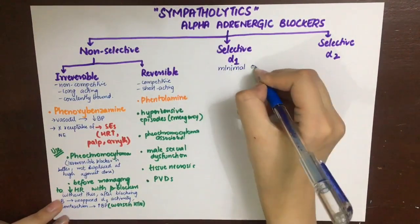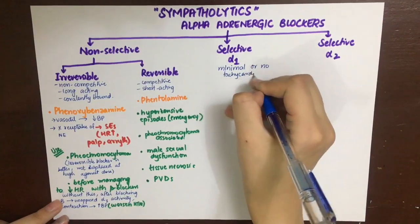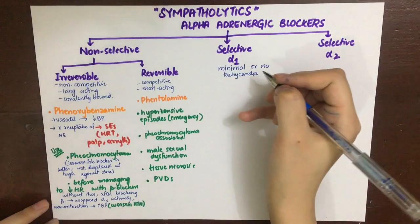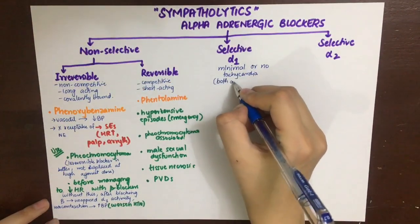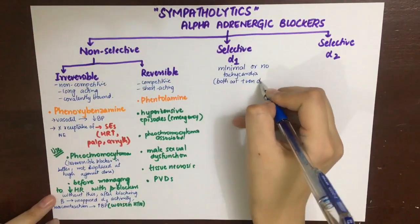Next are the selective alpha-1 blockers. Unlike the irreversible non-selective sympatholytics, they do not inhibit the reuptake of norepinephrine, so they are not associated with side effects such as tachycardia, palpitations, and arrhythmias. They cause dilation of both arteries and veins.